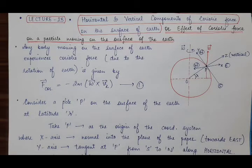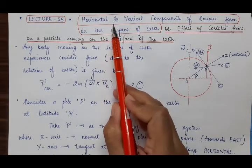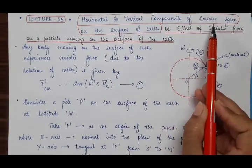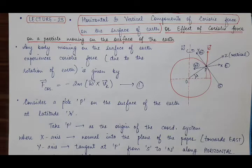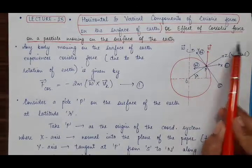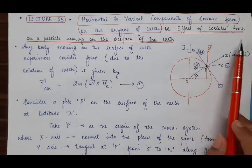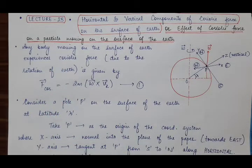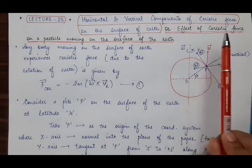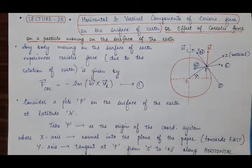Good morning students. In this lecture 25, the next topic of discussion is horizontal and vertical components of the Coriolis force on the surface of Earth. This article can also be asked as the effect of Coriolis force on a particle which is moving on the surface of the earth. In the previous lecture, we studied the effect of Coriolis force on a particle falling freely towards the surface of the earth. Here we will derive the horizontal and vertical components of Coriolis force.